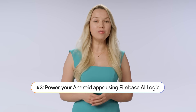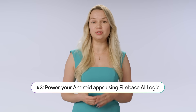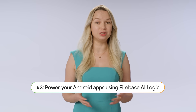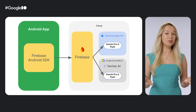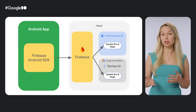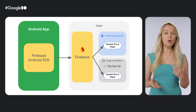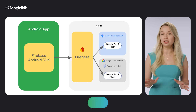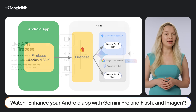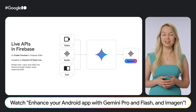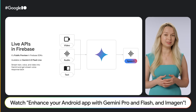Number 3. Power your Android apps with Gemini Flash, Pro, and Imagen using Firebase AI Logic. This simplifies integrating complex tasks like image generation or advanced reasoning without having to manage your own backend. And it even includes conversational AI experiences.